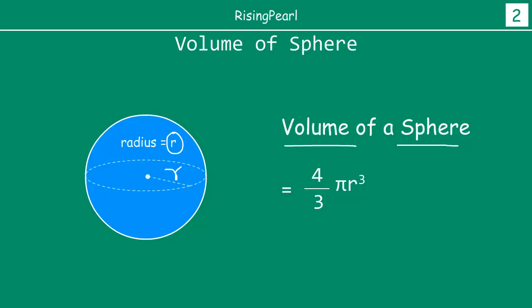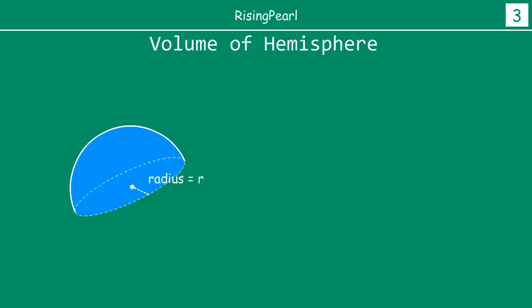What about a hemisphere? The hemisphere is nothing but — if you take the same plane and cut the sphere into two equal parts, each part is a hemisphere. The word 'hemi' means half, so you can think of a hemisphere as a half sphere.